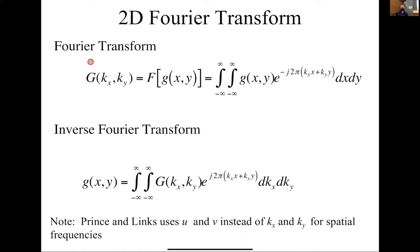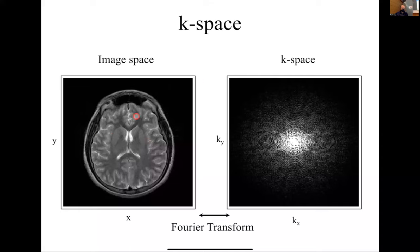We collect our data in k-space — the data that comes off the scanner is actually samples of G(k_x, k_y). For example, if your object was a rect function, the signal coming off the scanner would look like a sinc function. Then we take that data and plug it into MATLAB, Python, or C code and do the inverse Fourier transform to get our object back. So we want to review how to think about k-space, since most people don't naturally think in terms of k-space.